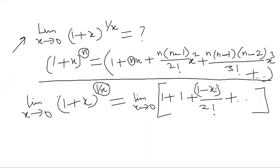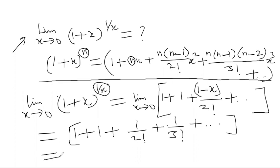Now what we will do is just put the value of x as 0. So we will get it as 1 + 1, and all others will be 0. We will be getting just 1/2!, then we will get 1/3! and so on.